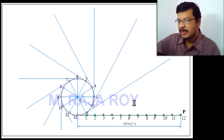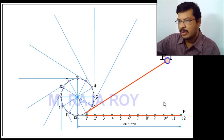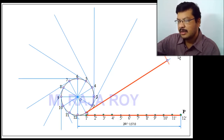Next step: take the distance P to 1-dash as radius, with point 1 as center, and draw an arc onto the tangent at point 1. The intersection point is called P1. So, using P-to-1-dash distance as radius and point 1 as center, I have drawn an arc onto this tangent, giving point P1. This is the first point on the involute.